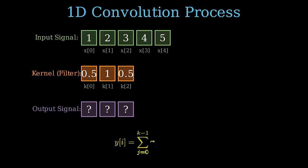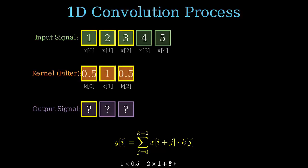Mathematically, the process is defined by this summation formula. We multiply corresponding elements and sum the results. Let's begin the slide. The kernel positions itself over the first three input values, which are 1, 2, and 3. We perform element-wise multiplication: 1 times 0.5 plus 2 times 1 plus 3 times 0.5. Summing those products gives us 4.0. This value becomes the first element in our output feature map.